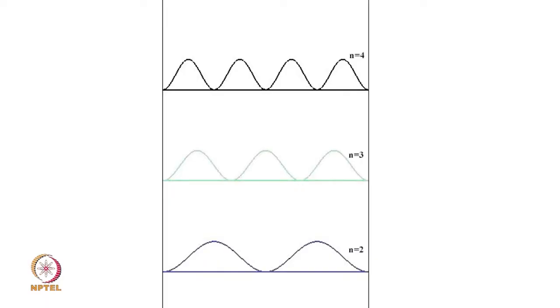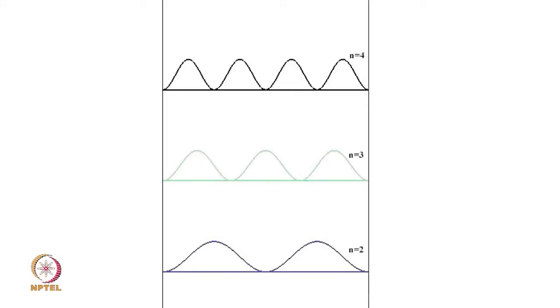Since it is 0 to L you have that shape and also the shapes for n equal to 4 and as you see that as n increases, these oscillations become so close to each other that for very very large n it looks like the probability density is uniform.